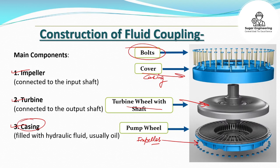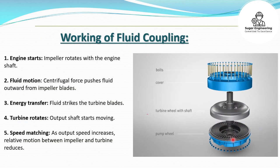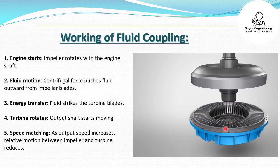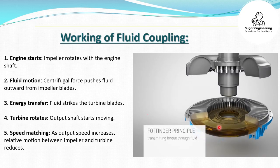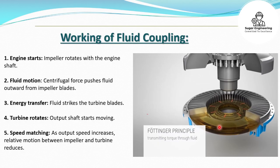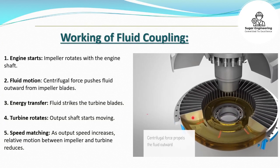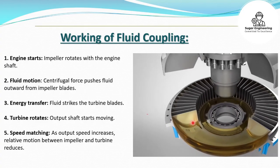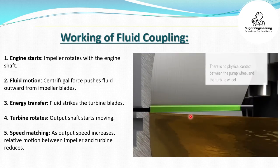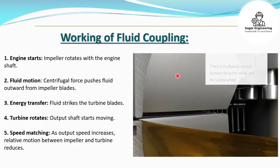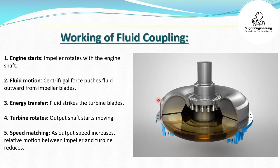Now we will discuss the working of the fluid coupling. This is the pump wheel and it is connected to a motor or any prime mover. A fluid known as oil is filled in the casing of the fluid coupling, and the torque transmission is done through the fluid. As the pump wheel rotates, centrifugal force is generated that pushes the fluid outwards from the impeller blades. There is no contact between the pump wheel and the turbine wheel, so there will be wear-free torque transmission from the input shaft to the output shaft using a fluid coupling.